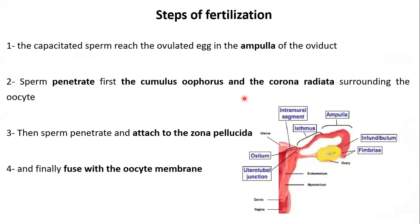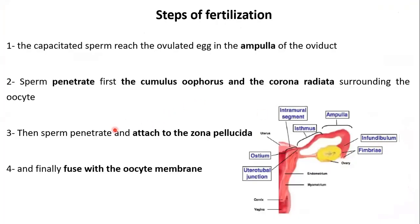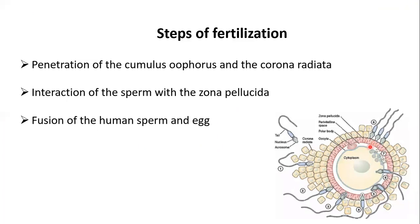The sperm cell should first penetrate the cumulus oophorus and the corona radiata, then it will reach the zona pellucida, interact with it, attach to it, and penetrate it to reach the oocyte. At the level of the oocyte, it will fuse with the oocyte membrane. So the first step of fertilization is the penetration of the cumulus oophorus and the corona radiata cells, then the interaction of the sperm cell with the zona pellucida and its penetration, and the last step is the fusion with the oocyte or egg membrane.